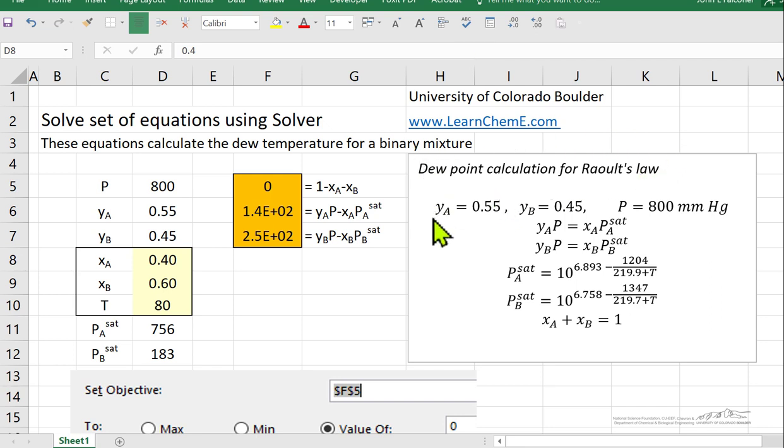And so in the box here on the right, it shows the equations and the parameters. So three equations: YA P equals XA PA sat, these two, plus XA plus XB equals one.